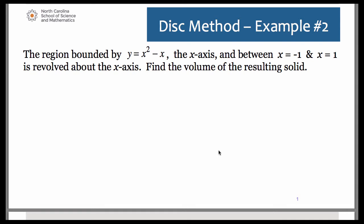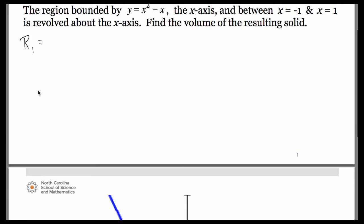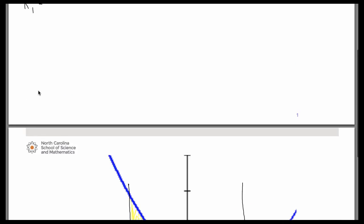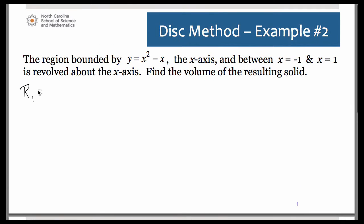So the first rectangle, the one that was over on the left, I'll call that R1. Remember that in order to find the length of that rectangle, it's going to be top minus bottom. So at the top it's hitting the curve, x squared minus x, and on the bottom it's obviously hitting the x-axis.